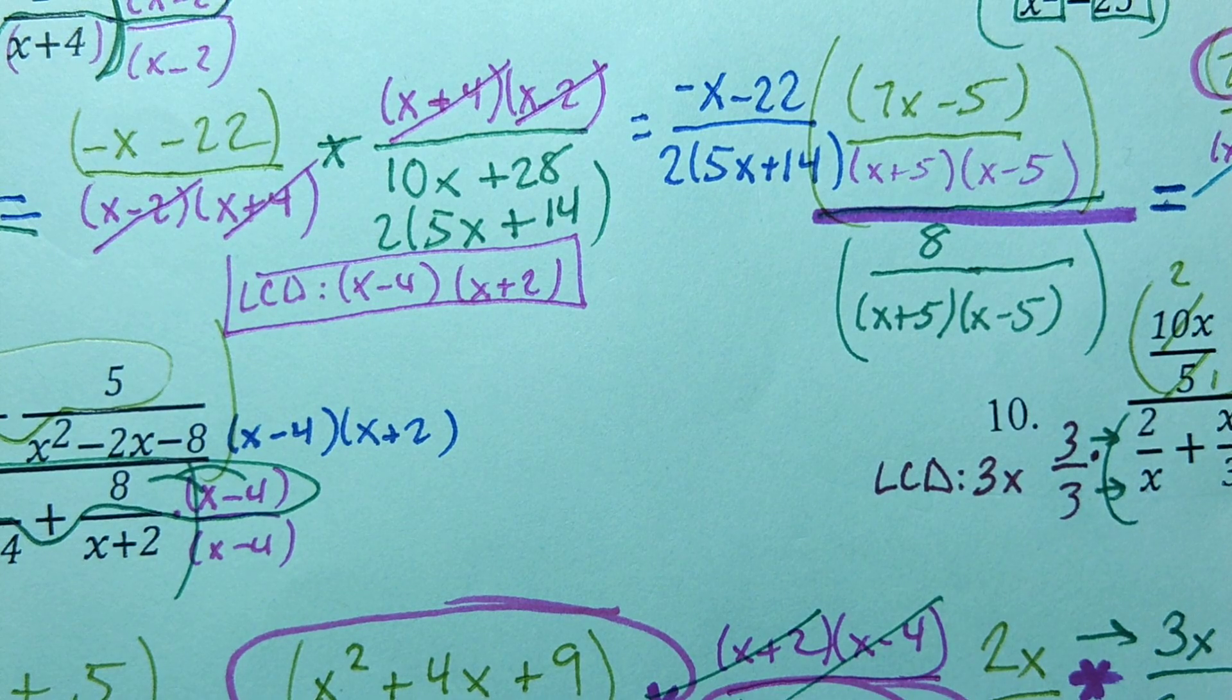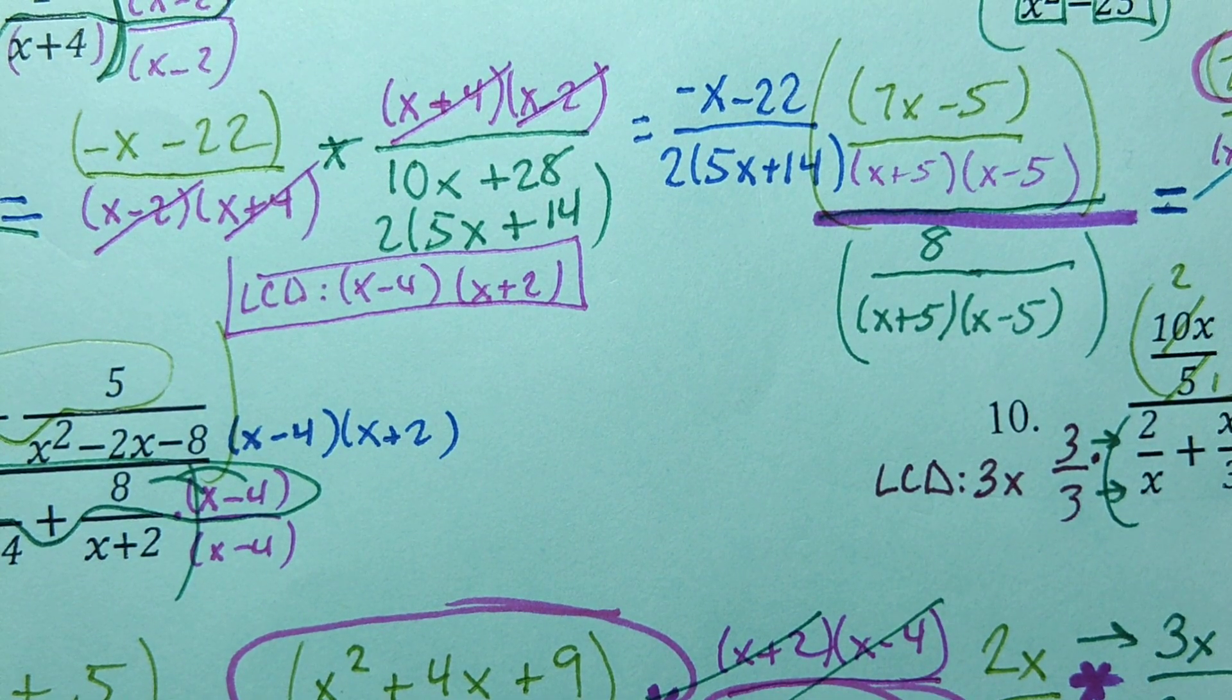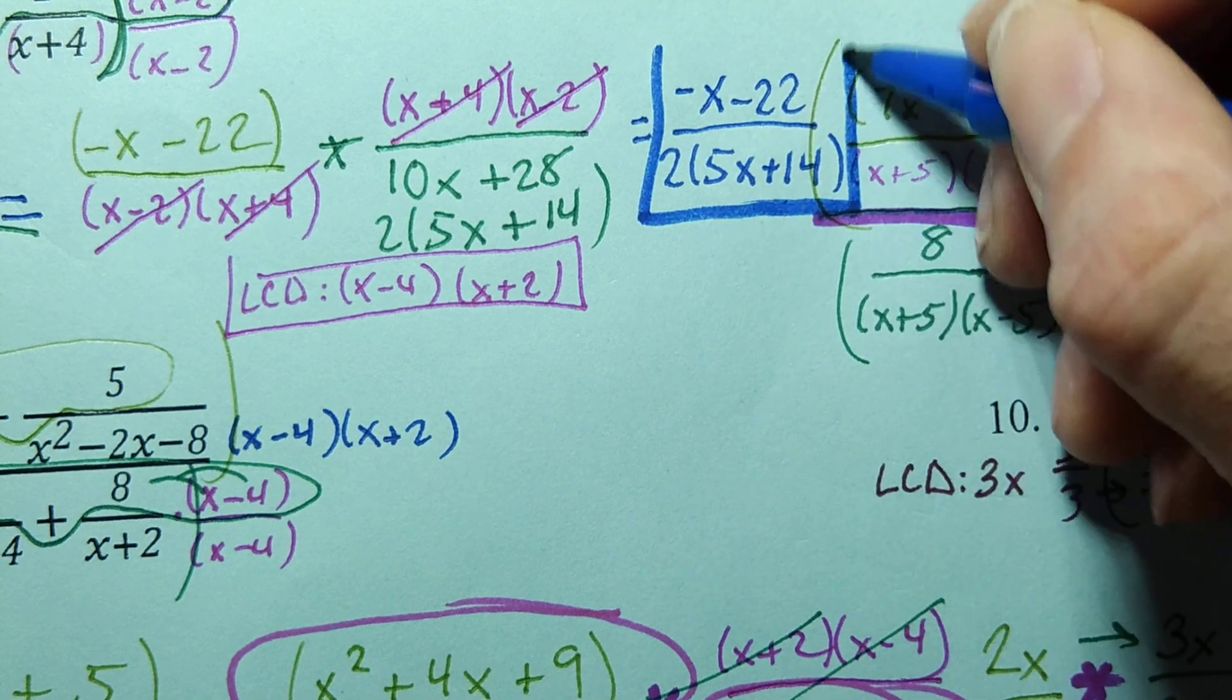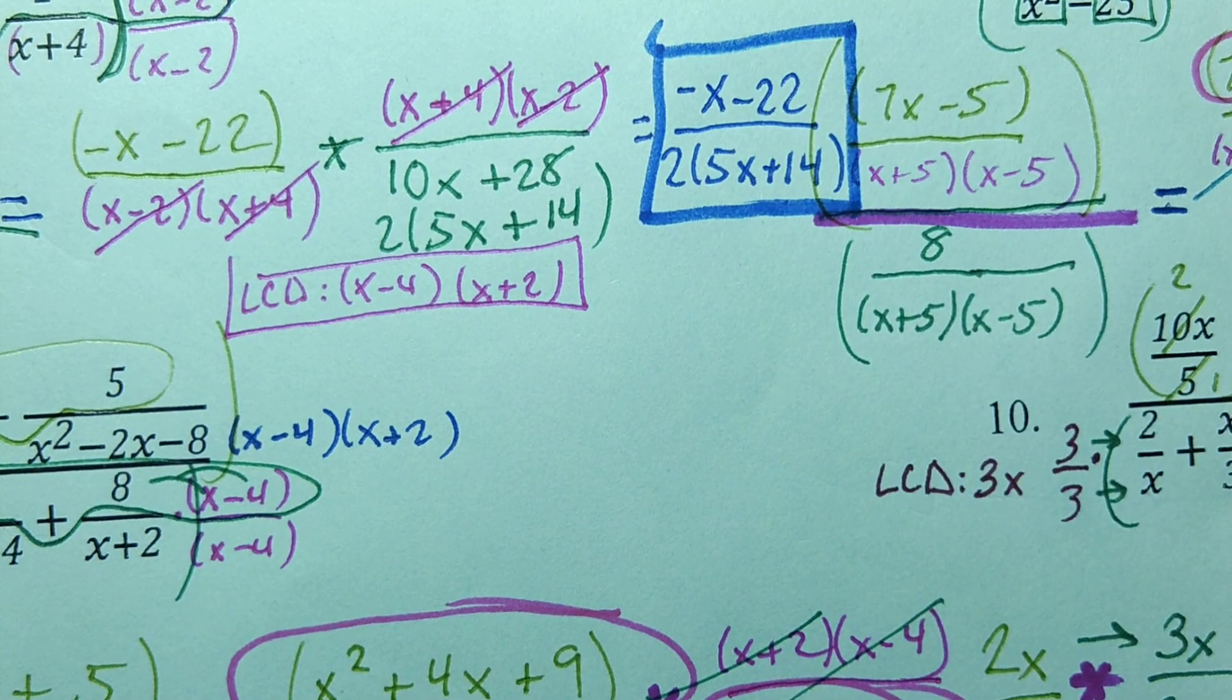Leaving it in that factored form. If you wanted to factor out a negative 1, you could, but since it's not going to lead to any simplifying, and it's not like a necessary GCF, you can go ahead and leave it as such.